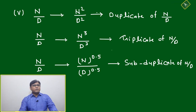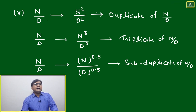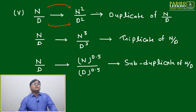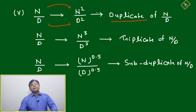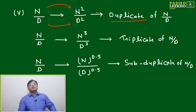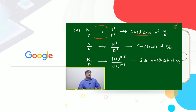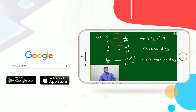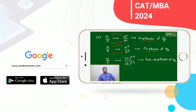Now, a few terms to remember: n/d — if you square both numerator and denominator, it is called the duplicate of n/d, or duplication of ratio. If n/d is raised to the third power, it is called the triplicate of n/d. And if n/d is raised to the power 0.5, it is called the sub-duplicate of n/d.